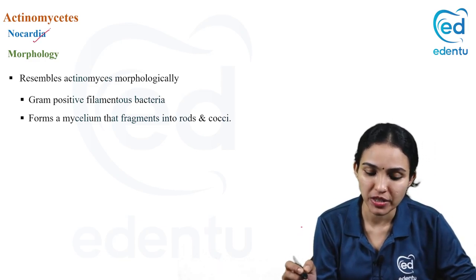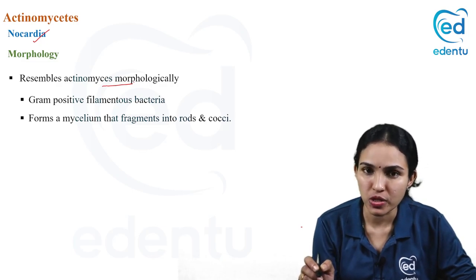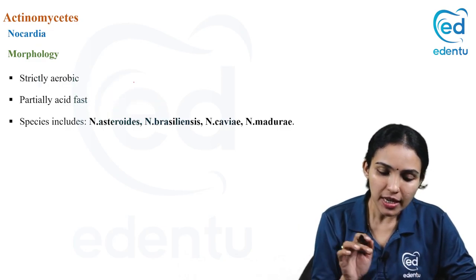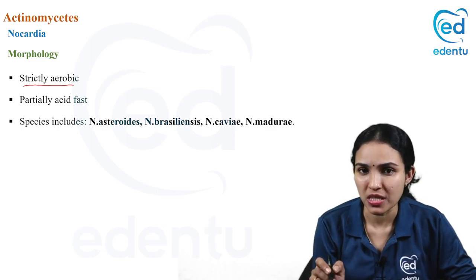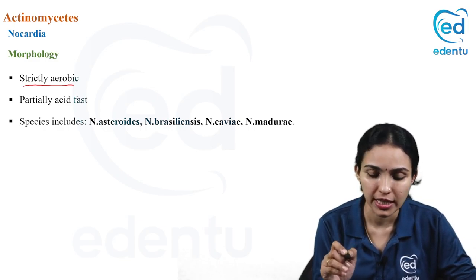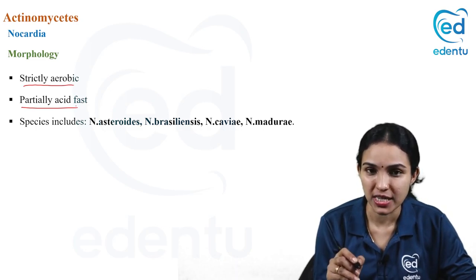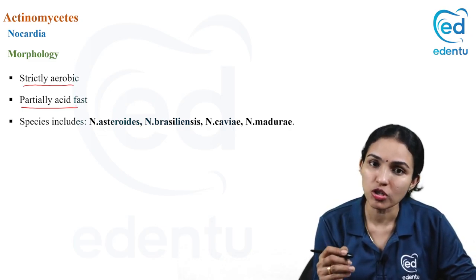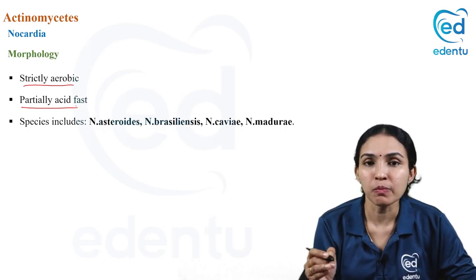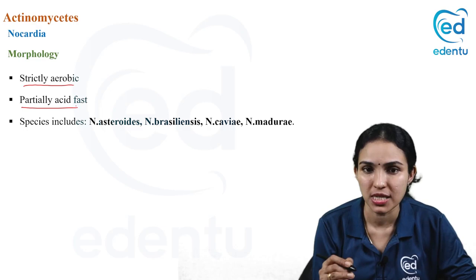Nocardia is partially acid-fast — that is how it differs from actinomyces. Otherwise it resembles actinomyces morphologically: gram-positive filamentous bacilli forming mycelium that fragments into bacilli and cocci forms. However, nocardia is strictly aerobic, unlike actinomyces which grows better under anaerobic and microaerophilic conditions. Remember: among acid-fast organisms, mycobacteria (TB, leprosy, atypical) are fully acid-fast, while nocardia is partially acid-fast using 1% sulfuric acid.